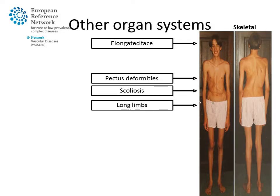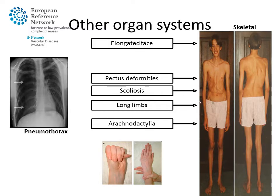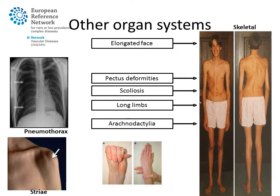Limbs are typically very long in Marfan syndrome patients, leading to an increased arm span. Fingers and toes are elongated, leading to spider-like hands or arachnodactylia. Other manifestations include pneumothorax, or striae — stretch marks on the skin — which are typically located at the shoulders or the lower back.